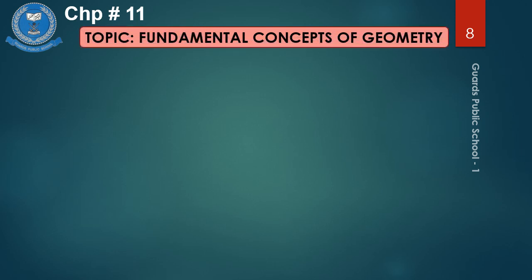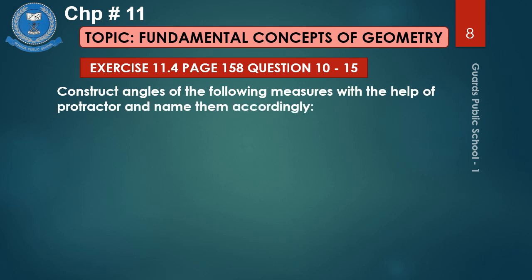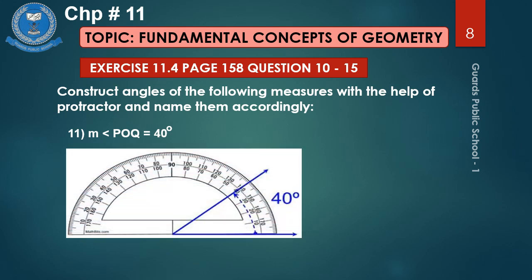Before starting Exercise 11.4, you need to complete all your home assignments. Now Exercise 11.4, page number 158, question number 10 till 15. The question is: construct angles of the following measures with the help of a protractor and name them accordingly. I am doing number 11 for you — the measurement, M is for measurement, the angle POQ equals 40 degrees.